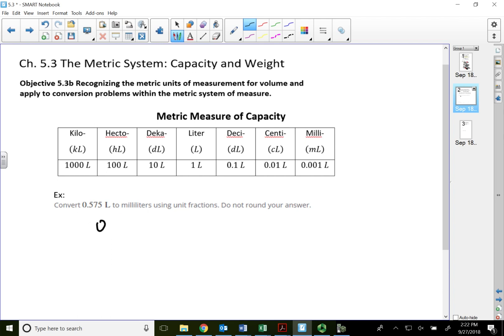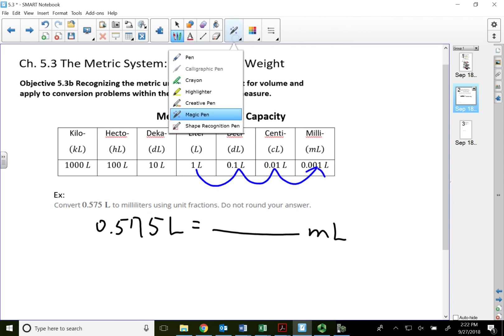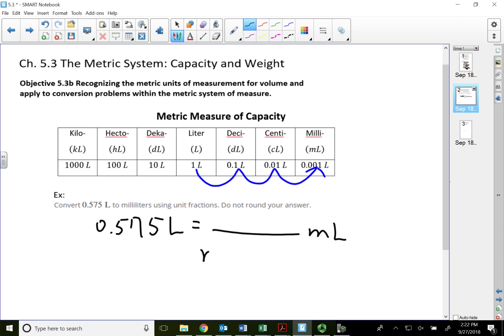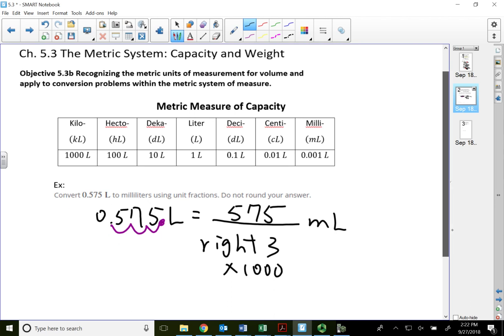This problem wants me to convert 0.575 liters to milliliters. So I'm starting at liter and I need to go to milli, which is three places to the right, which is the same thing as times a thousand. So move three places to the right: one, two, three. Decimal is now behind the five, so that's 575 milliliters.